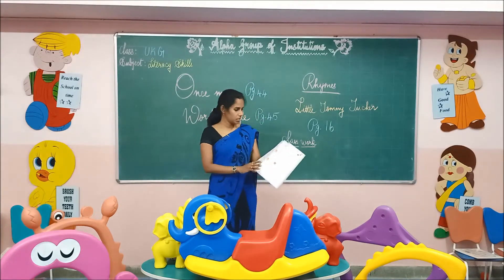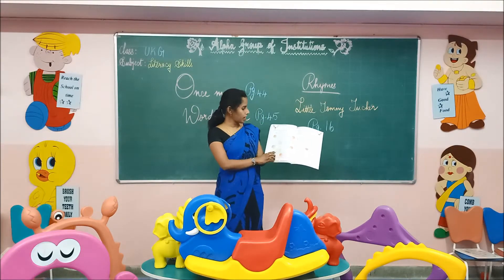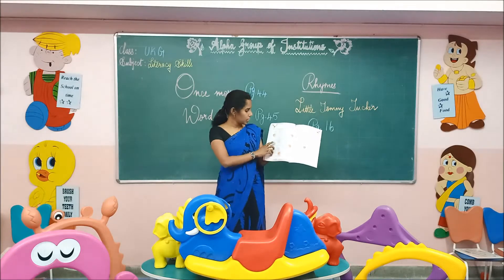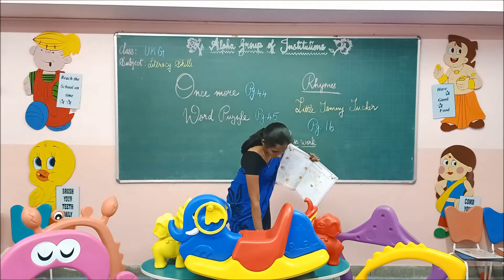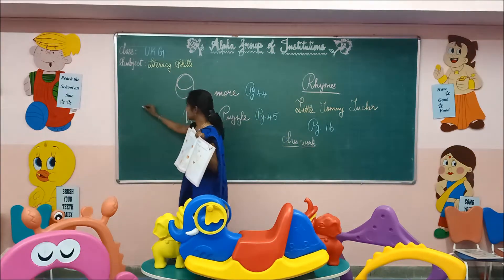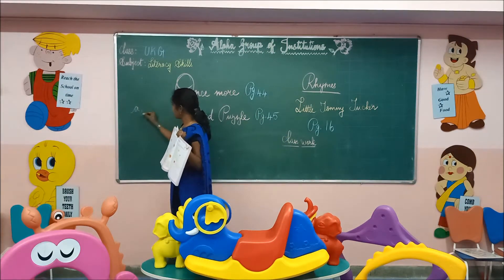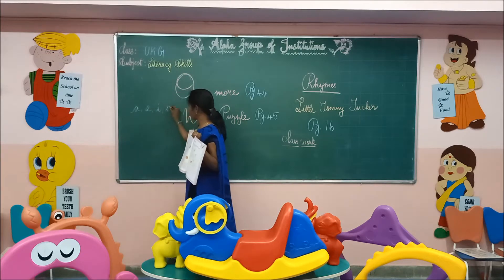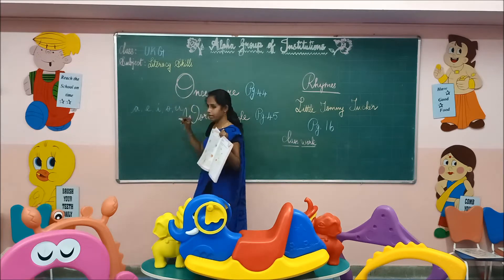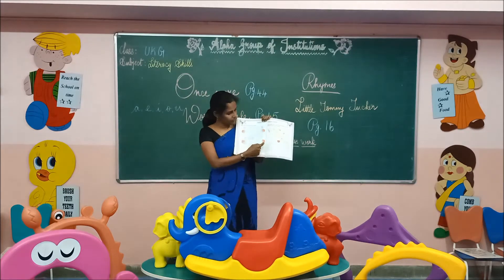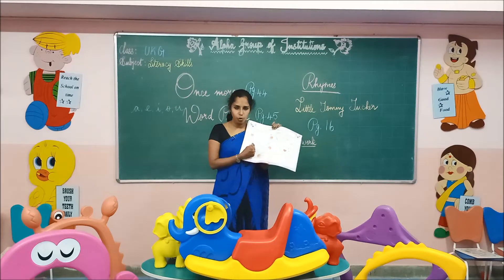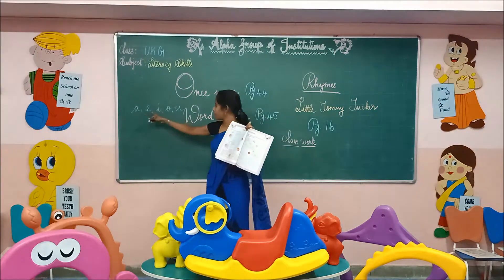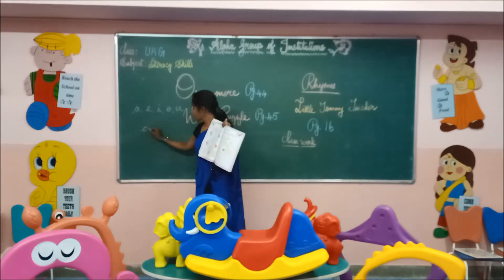The topic is 'Make words using the given words.' Some letters are given in bubbles. The bubbles are A, E, I, O, and U. They have given bubbles and asked us to frame words using the bubbles. While you are framing the words, the bubbles should come at the middle.